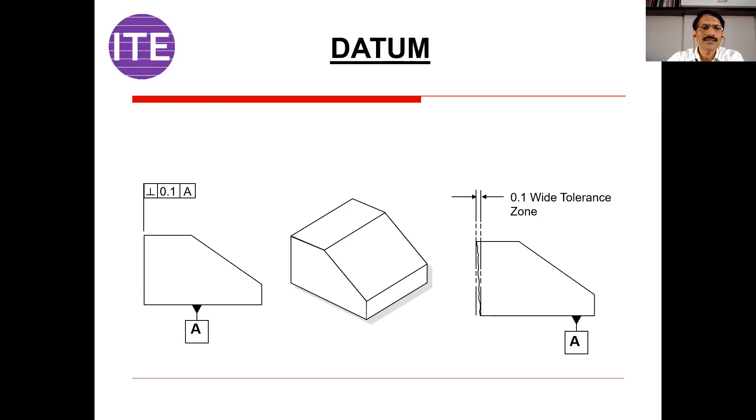Here one symbol is given, the feature control frame. This frame shows the geometric characteristic, that is perpendicularity. The second one is the geometric tolerance, and third one is datum reference letter. Some characteristics require datum, some do not require any datum. Form categories, all the characteristics do not require any datum. Other characteristics like perpendicularity or parallelism, they require datum.